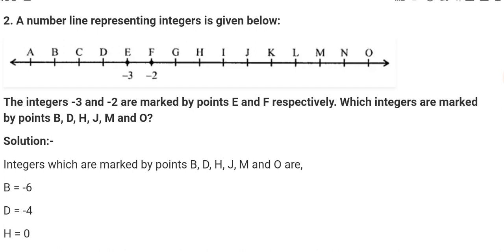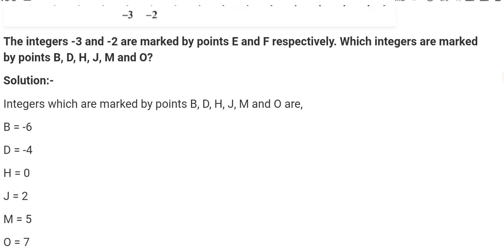Which integers are marked by point B, D, H, J, M, and O? So you can see B is minus four, D is minus one, H is two, J is five, M is five, and O is seven. So by this you can see all the integers marked on the number line. So here the answer is written. This is the correct answer.